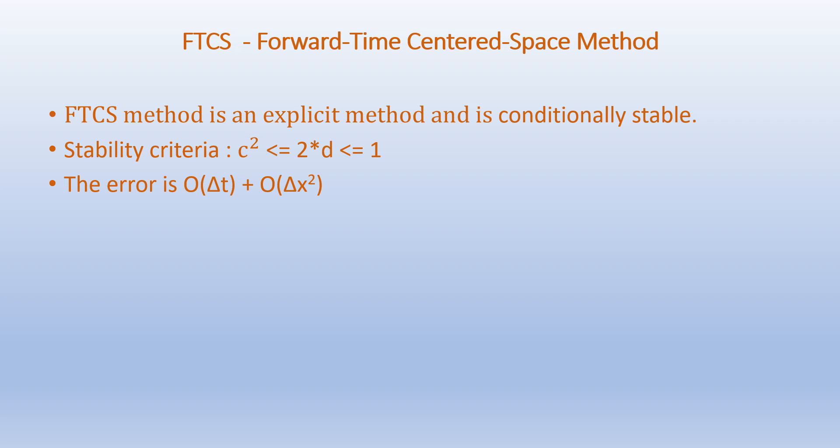We must note that the FTCS method is an explicit method and is conditionally stable. The stability criteria is given as C² must be less than or equal to 2D, which must be less than or equal to 1. The error is of the order of delta_t and of the order of delta_x squared. Even when the stability criteria is met, for higher accuracy, delta_t and delta_x values should be smaller.